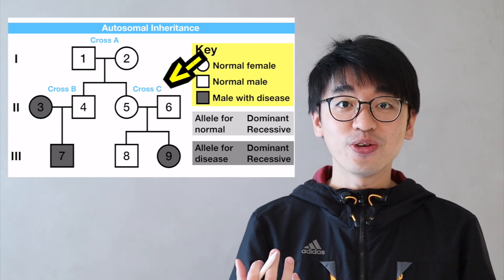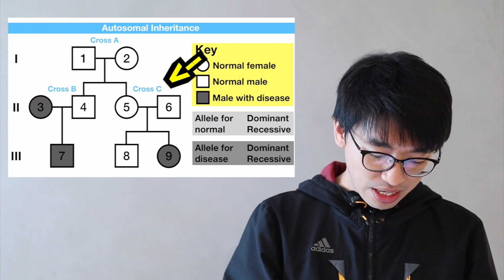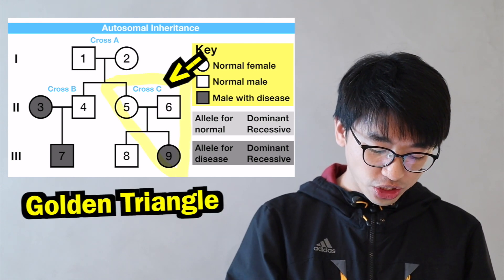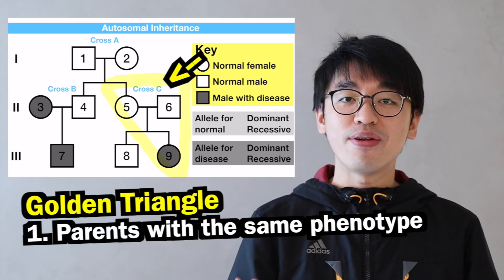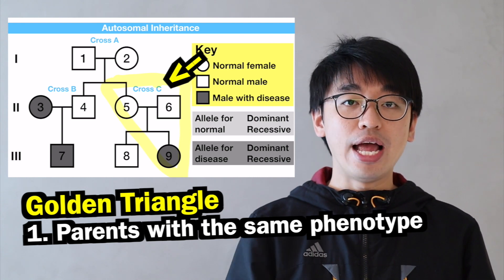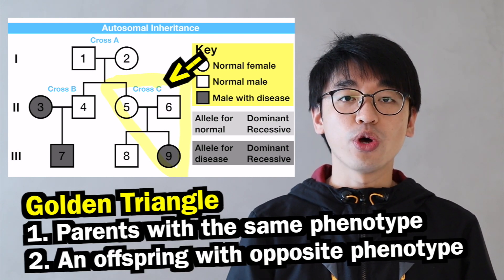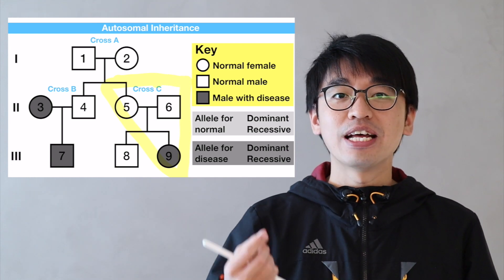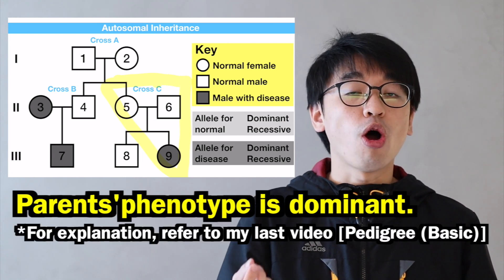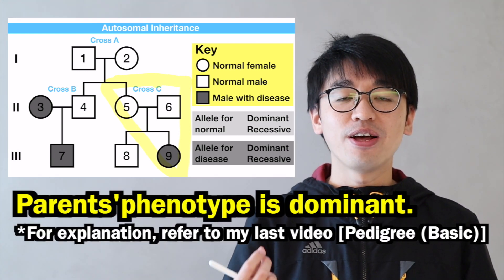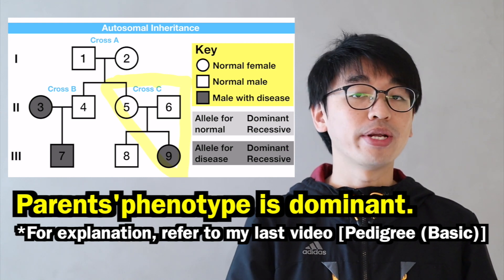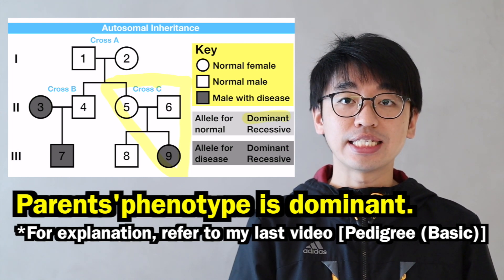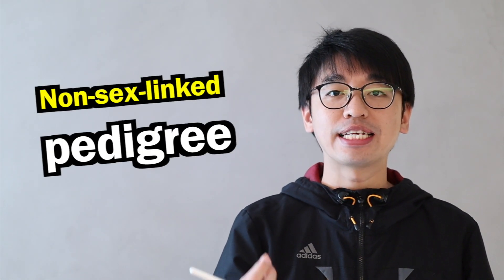We can use cross C because we can find the golden triangle — the parents have the same phenotype, but at least one offspring does not share that phenotype. In this case, the parents' phenotype is the dominant phenotype, meaning the allele for normal is dominant while the allele for disease is recessive. Remember, this method can only be used for non-sex-linked pedigrees.